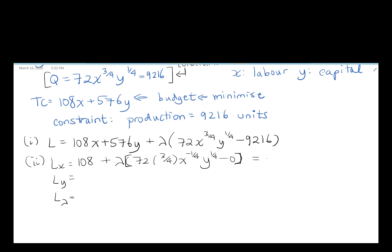We get 108 plus 3/4 of 72 gives us 54. So 54λx^(-1/4)y^(1/4). Ly is going to be 576 plus lambda times by 72 times 1/4, x^(3/4), y^(-3/4), minus 0.